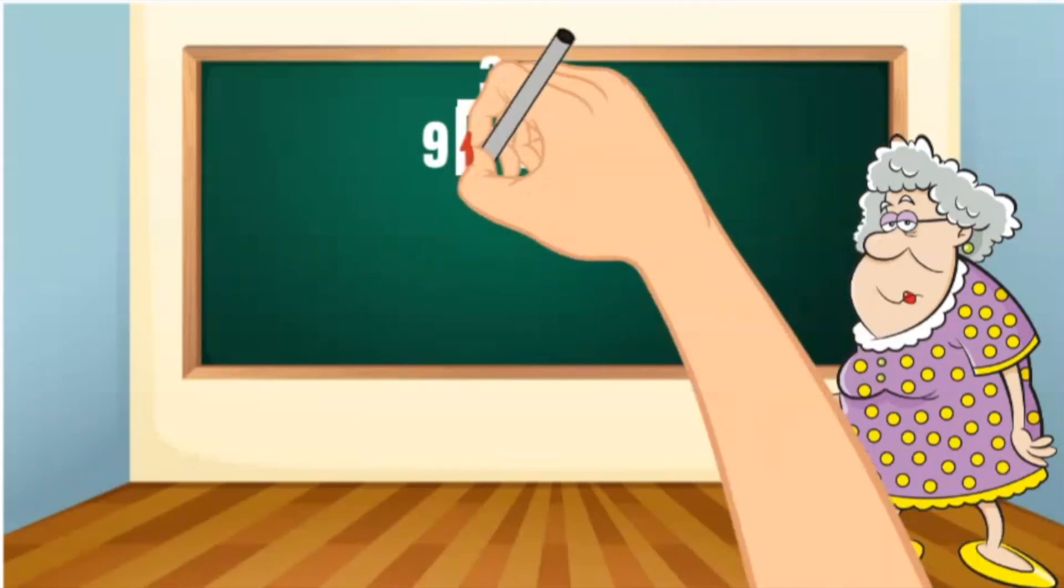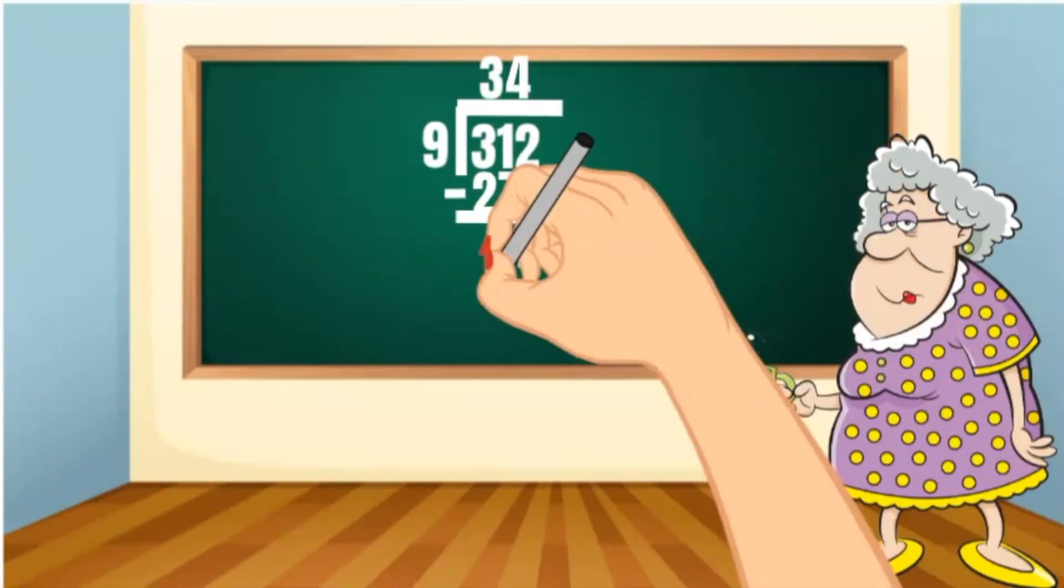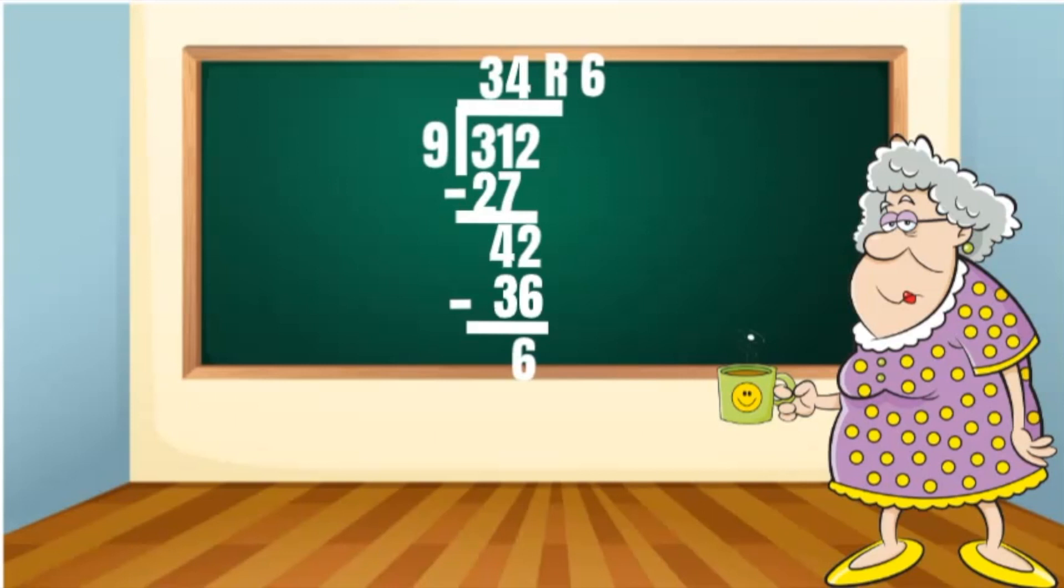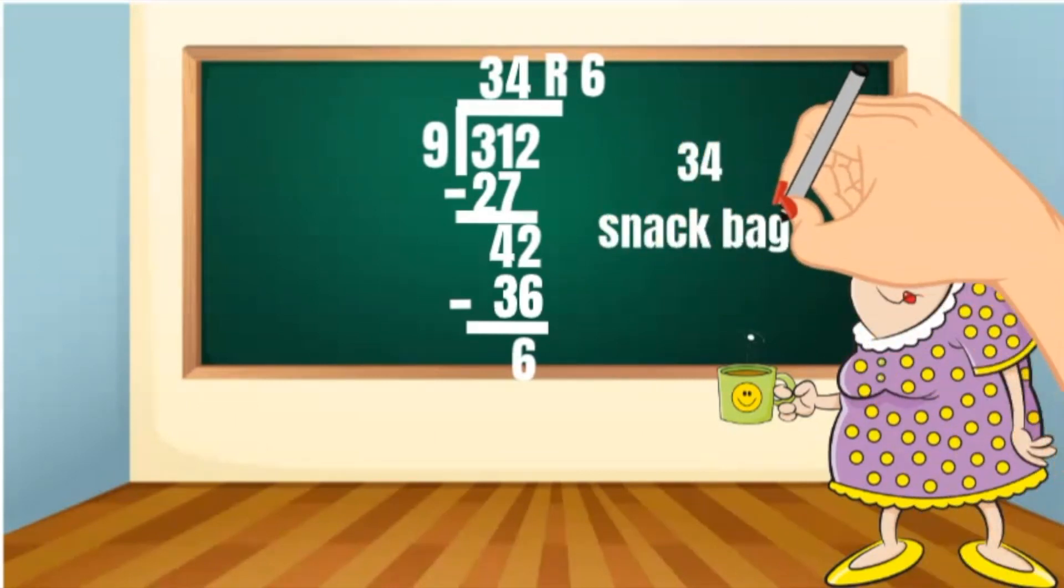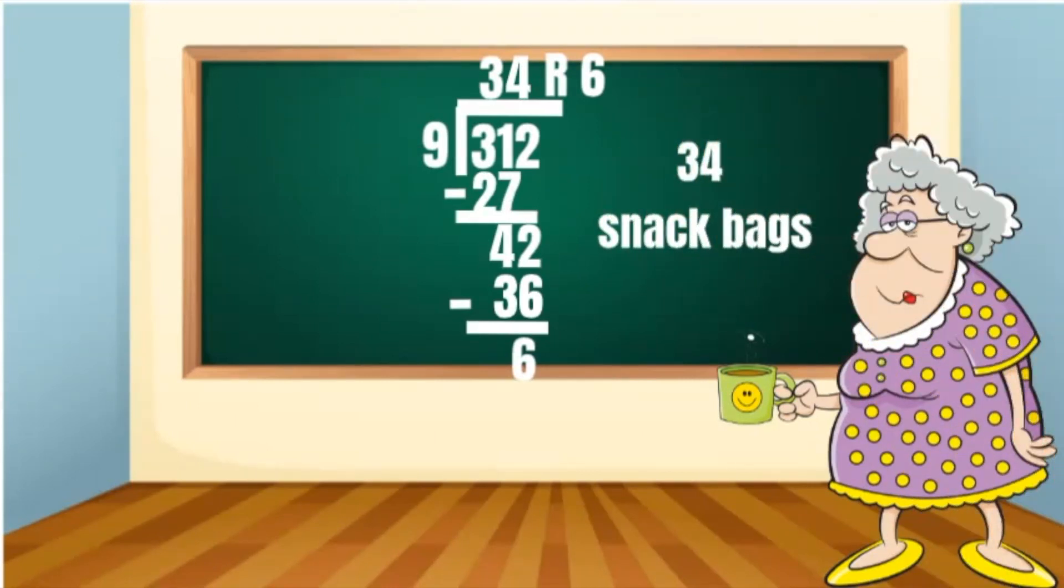I will have enough snacks to make 34 complete bags. After that, the remainder tells me that I will only have six snacks left. That is not enough to make another complete bag. 34 snack bags will have to be enough because that's all I got.